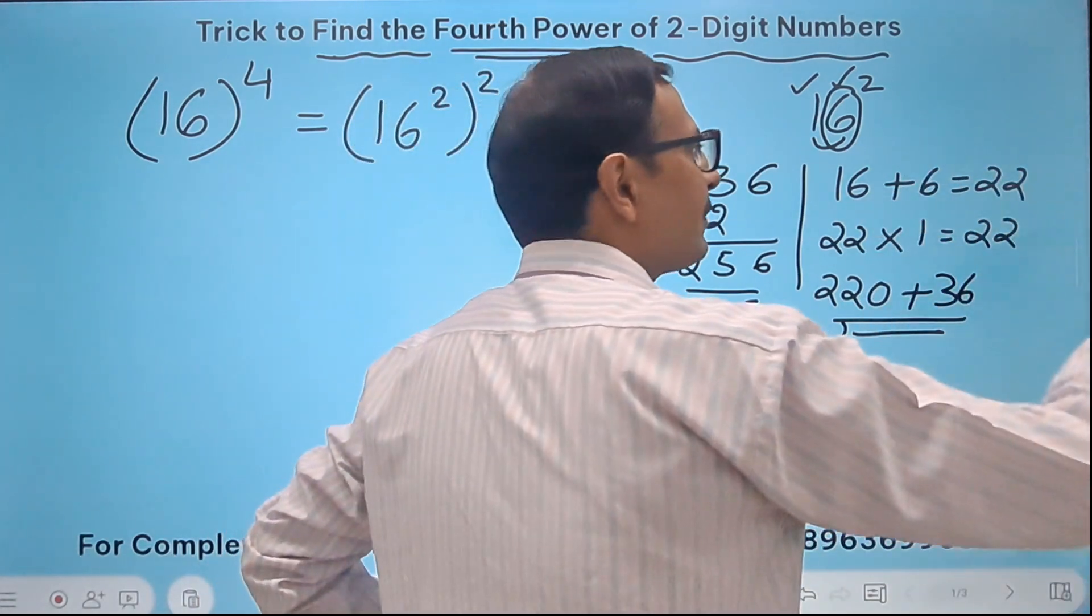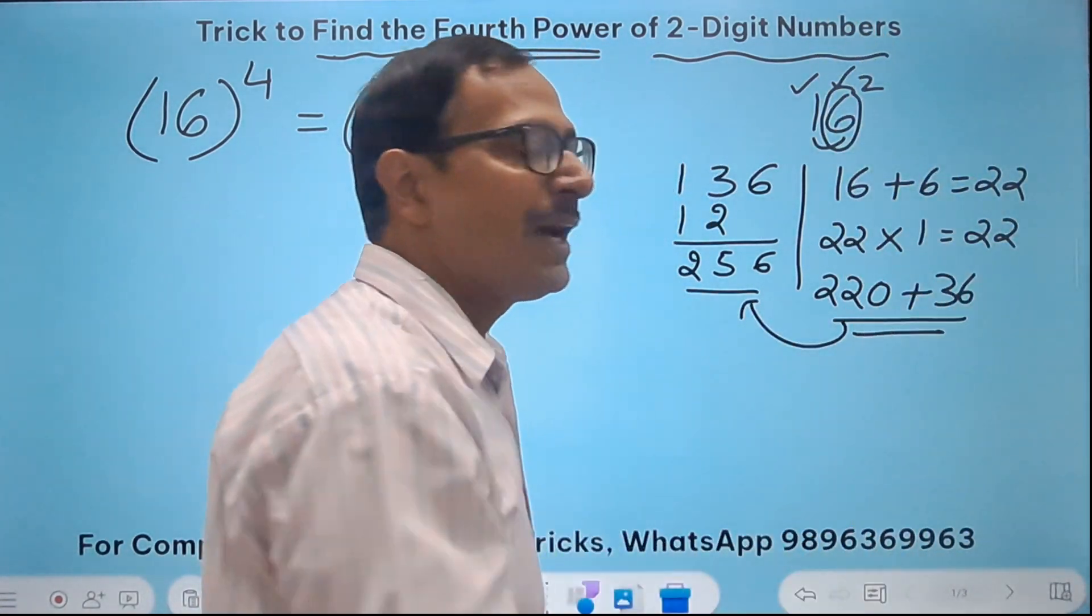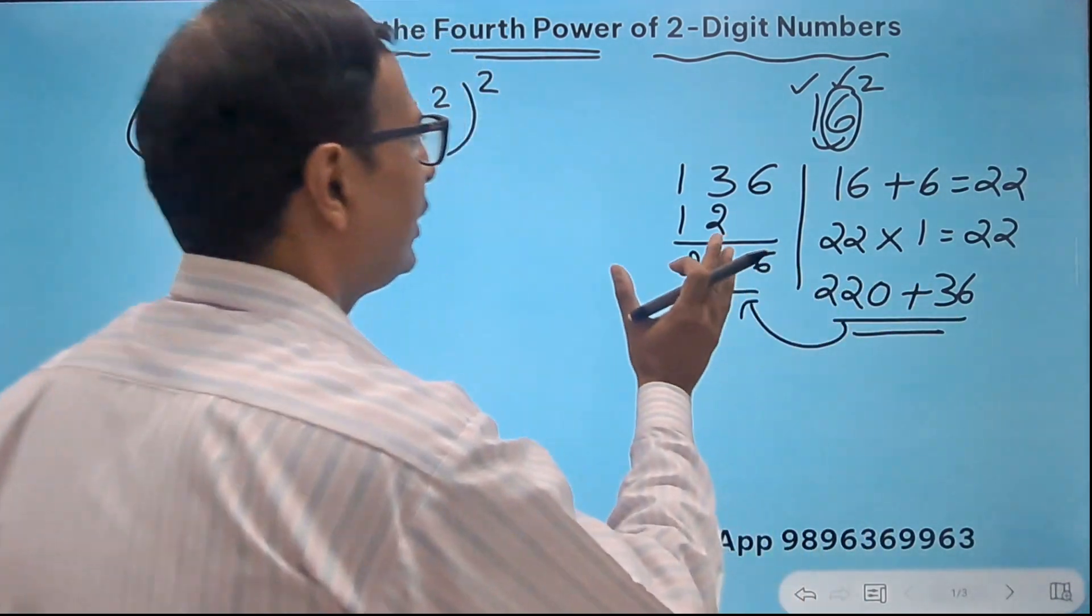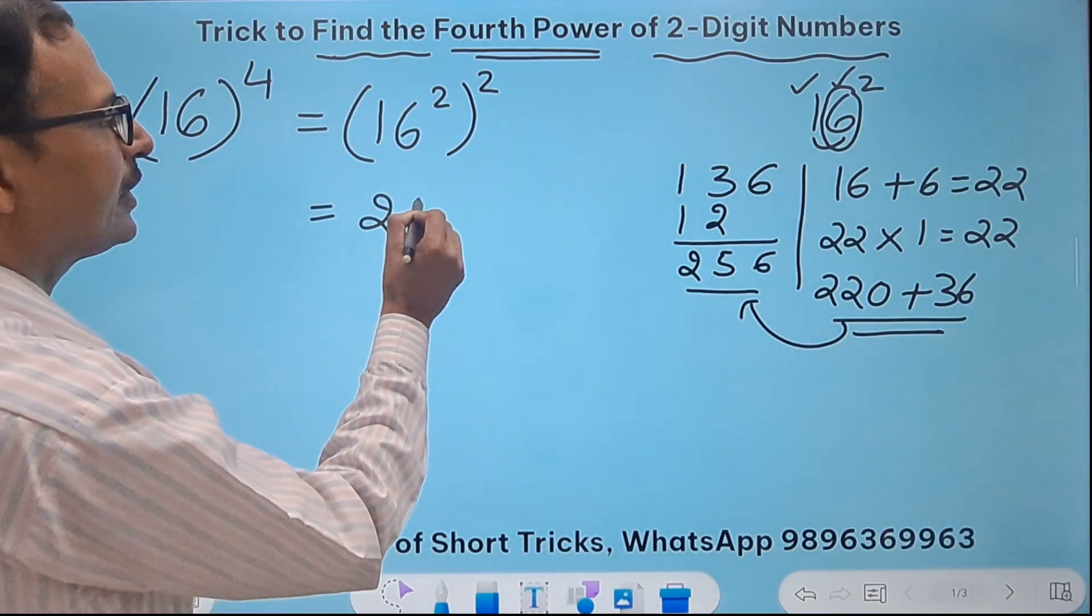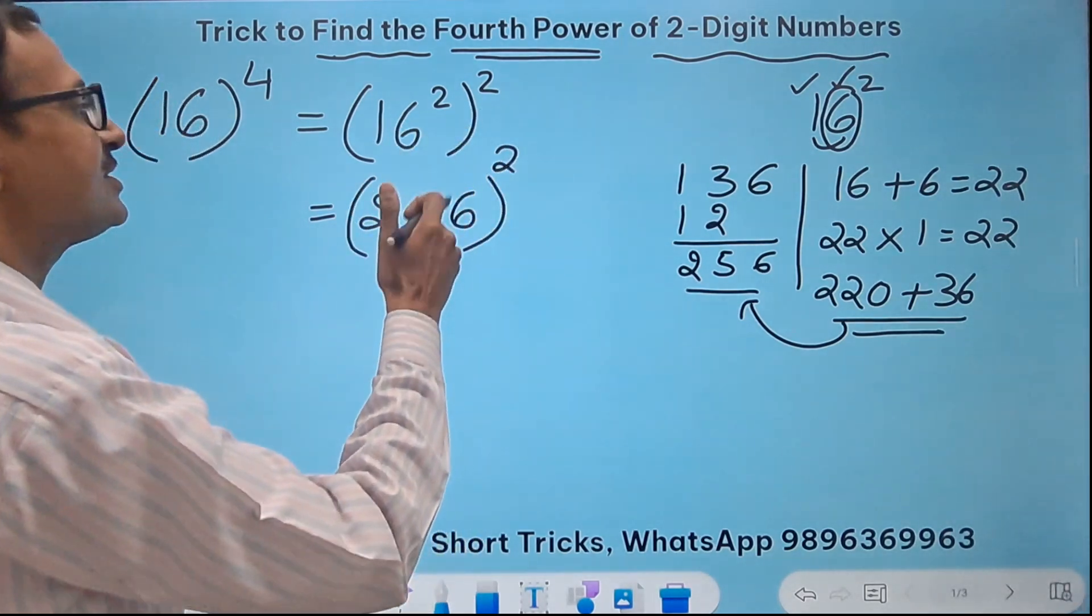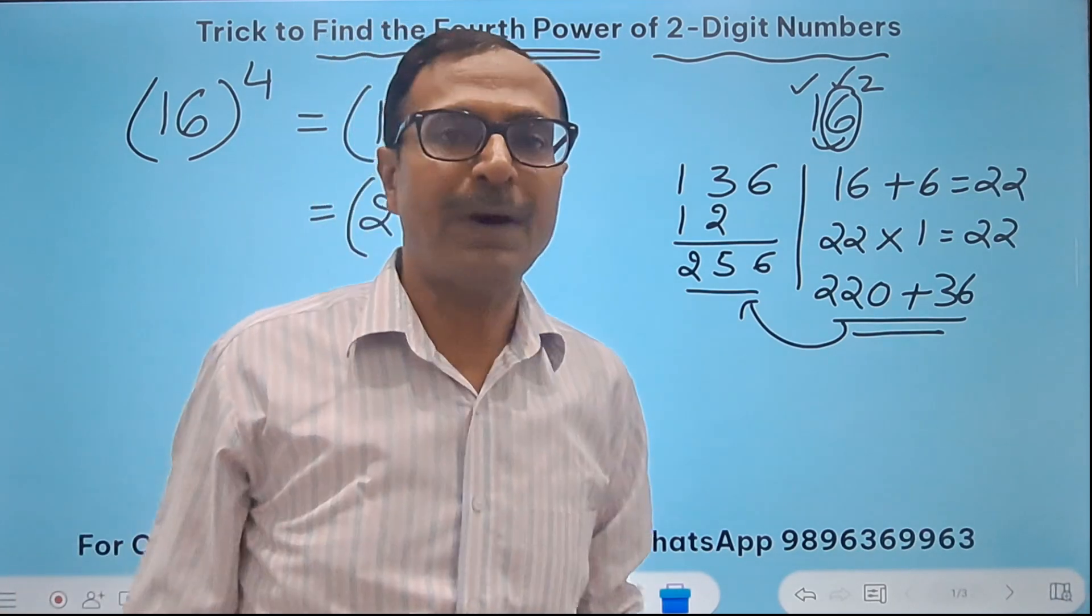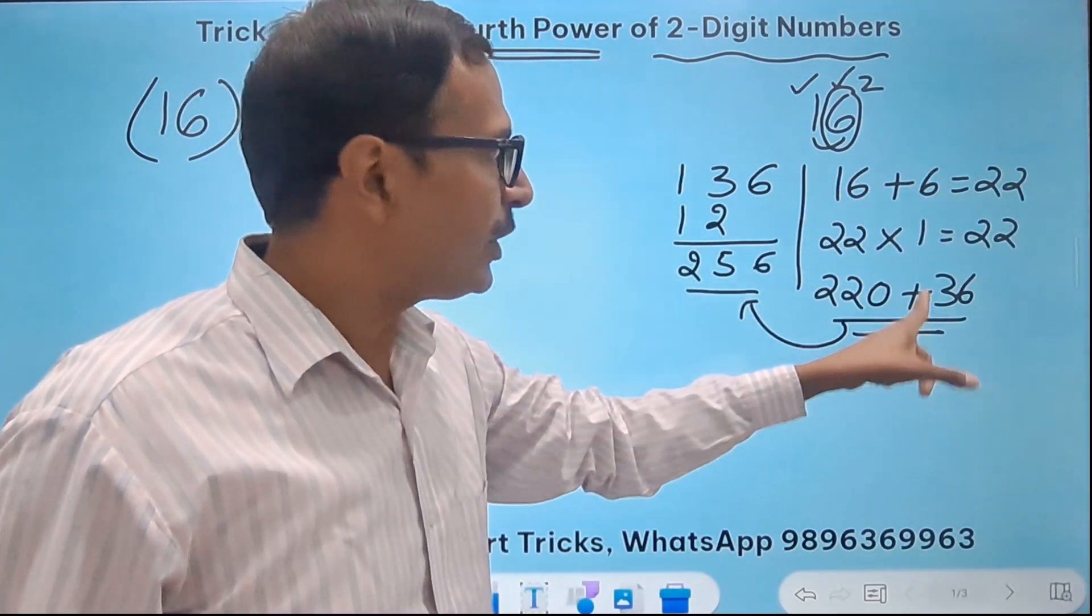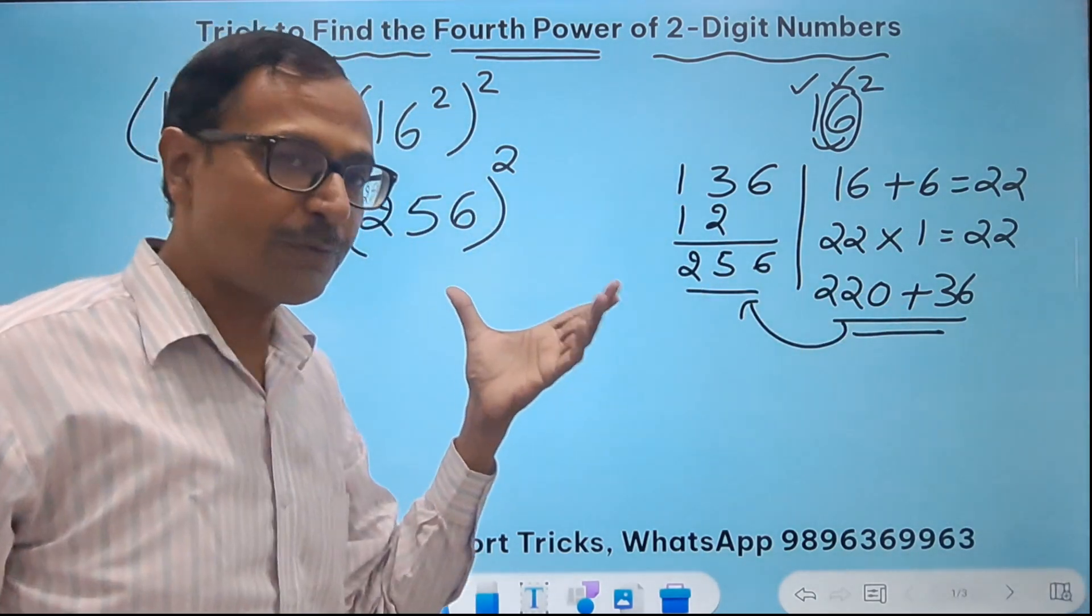Now this is the trick which I am going to use for squaring the numbers and for finding the fourth power also. So now I know that 16 square is actually 256 and now I have to do 256 square to get the fourth power of 16. Can we extrapolate this method to find the square of 256? Let's try.